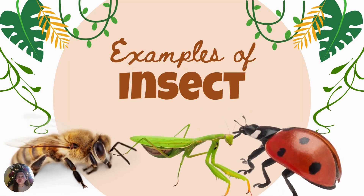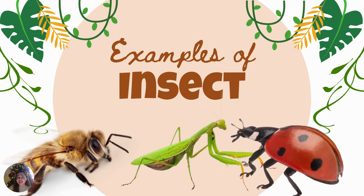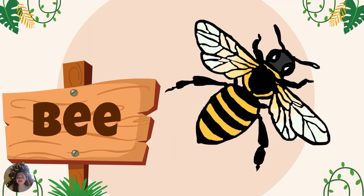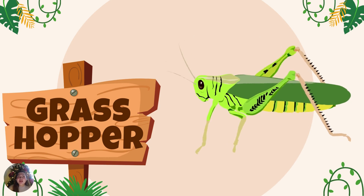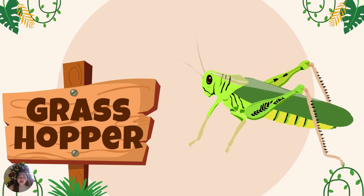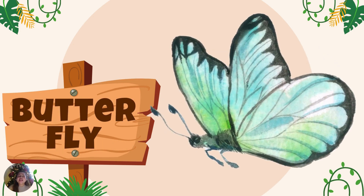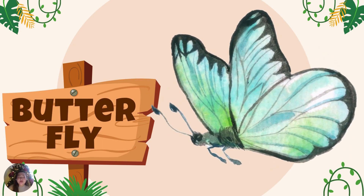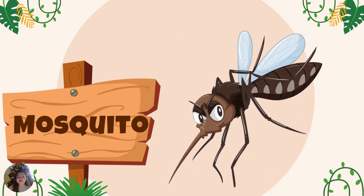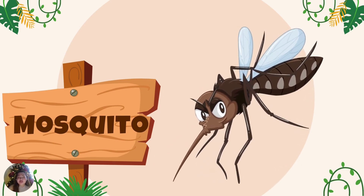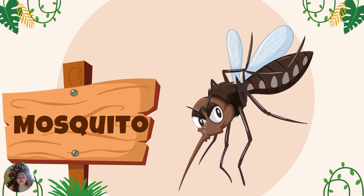I have here some examples of insects. All of them have the three main body parts: the head, the abdomen, and the thorax. Number 1 example: dragonfly. Number 2 example: grasshopper. Number 3 example: ladybug. Number 4 example: butterfly. And last but not the least, mosquito. All of them are insects and all of them have three main body parts: the head, the abdomen, and the thorax.